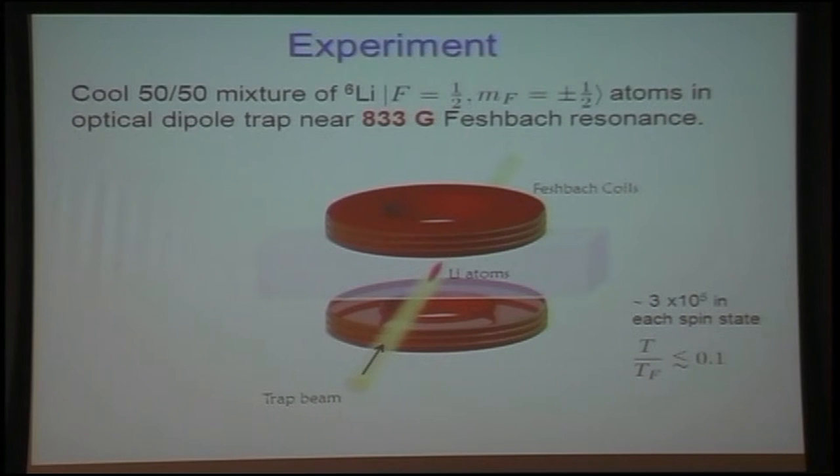So the experiment, we cool a 50-50 mixture of lithium-6 atoms in an optical dipole trap near the Feshbach resonance. Typically, 3 by 10 to the 5th atoms in each of the spin states, temperatures less than about or equal to 0.1 of the Fermi temperature. We have been down, the lowest temperature is about 0.06. We apply Bragg beams crossing at approximately 90 degrees, about 83 degrees, typically, interacting with the lithium atoms in this glass cell.